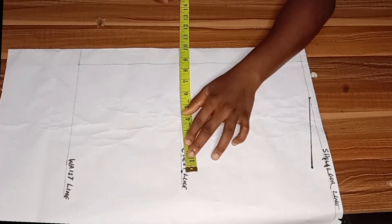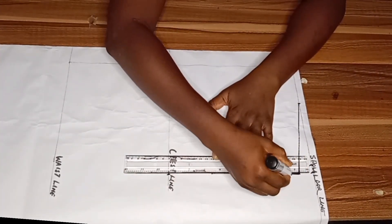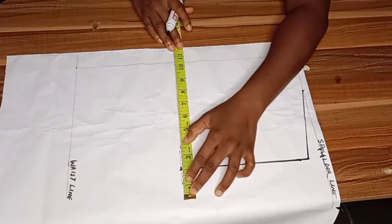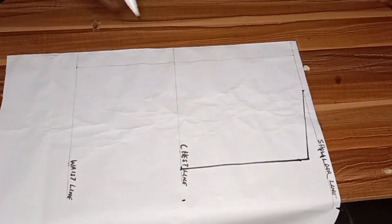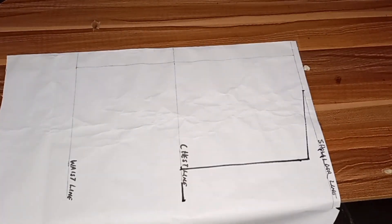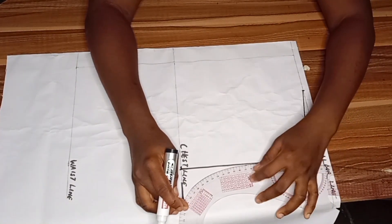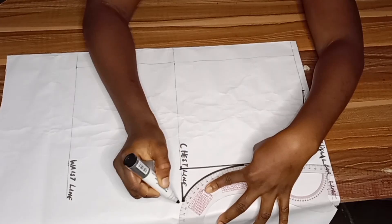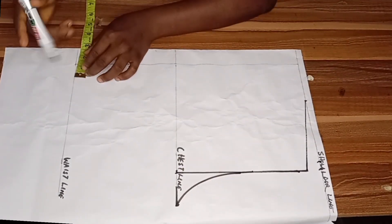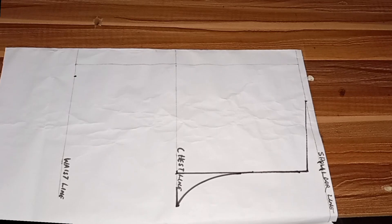To get an accurate armhole length, I'll remeasure all I got from the shoulder measurement and mark it on the chest line, then connect it straight into my shoulder slope. For the armhole curve, I'll divide my bust by four, connect it into the chest line, and using my curve ruler I'll connect it straight into the armhole length. Now we have our armhole curve.